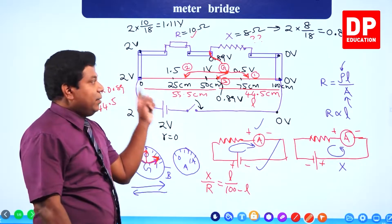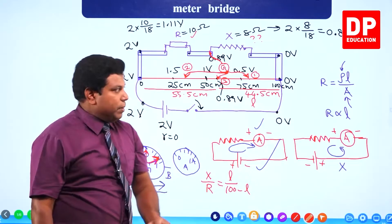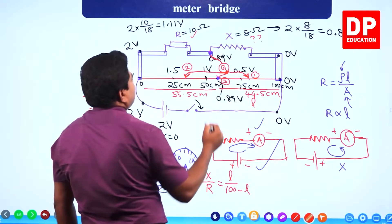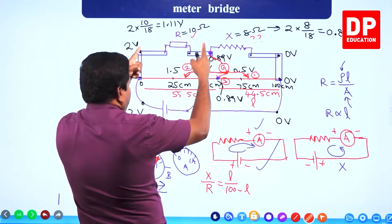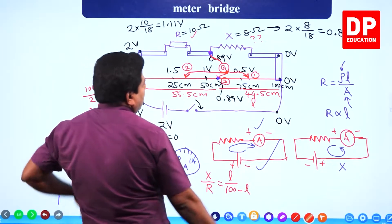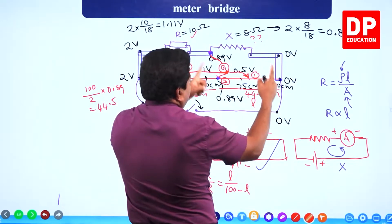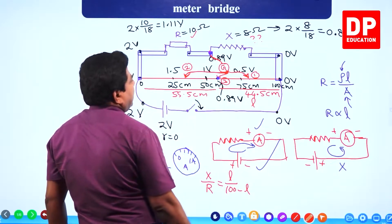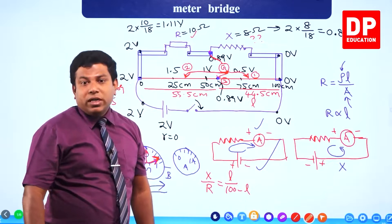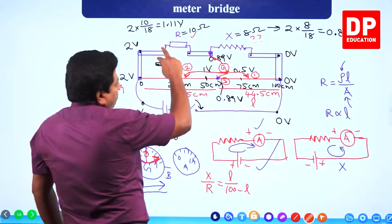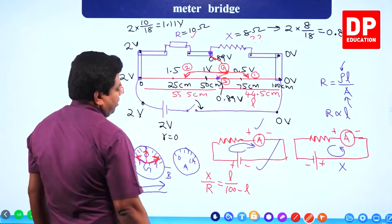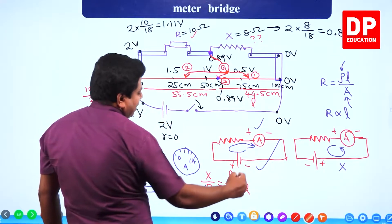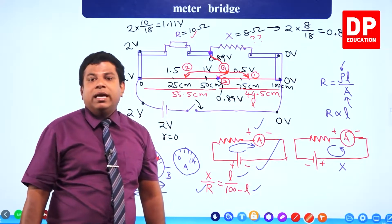At the equilibrium point, when the galvanometer shows zero, we can write: X/R = L/(100 − L). In this formula, R is known, L can be read from the meter tape, so we can find X. With one reading itself we can find X, but with one reading there can always be errors.